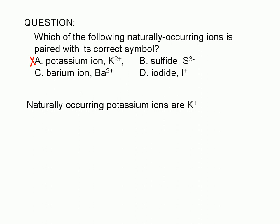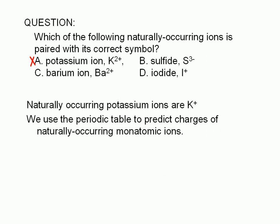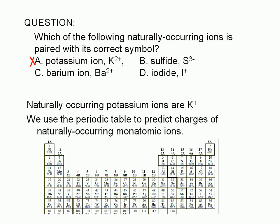We can use the periodic table to predict charges of naturally occurring monatomic ions. By monatomic ion, we mean an ion obtained from an atom losing or gaining electrons. Naturally occurring monatomic ions from group 1A all have a charge of plus one. Potassium is in this group, so potassium ions have a charge of plus one.